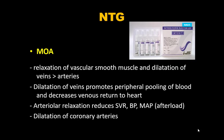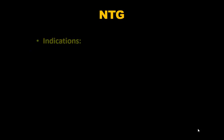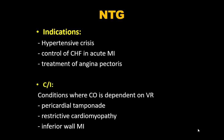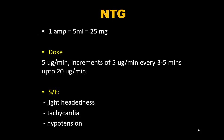GTN (nitroglycerin) relaxes vascular smooth muscle, dilating veins more than arteries. It causes peripheral pooling of blood, decreasing venous return and reducing preload. Arterial relaxation reduces SVR, decreasing afterload. It also dilates coronary arteries. Indications: hypertensive crisis, control of CHF in acute MI, and treatment of angina pectoris. Contraindications: conditions where cardiac output depends on vascular resistance — pericardial tamponade, restrictive cardiomyopathy, and anterior wall MI.